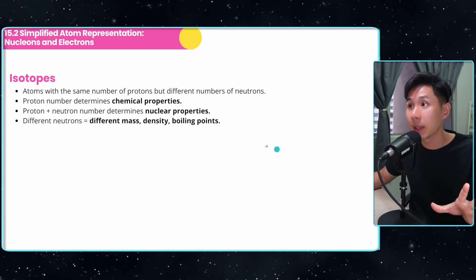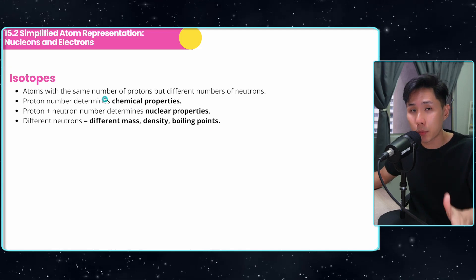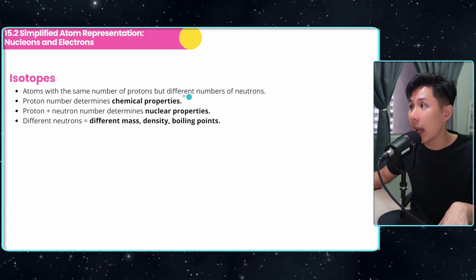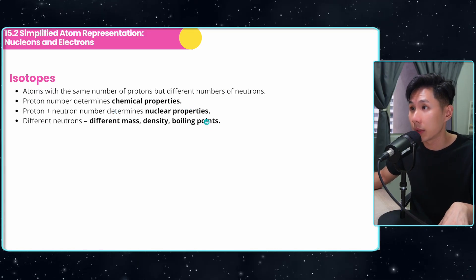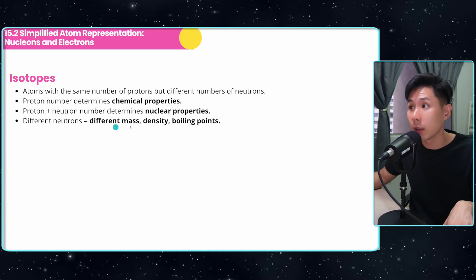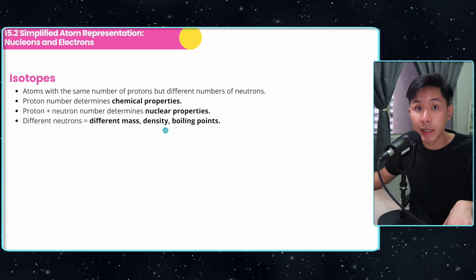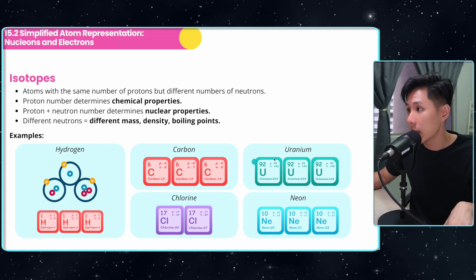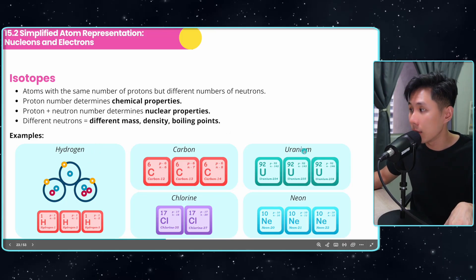Another concept: isotopes. These are atoms with the same number of protons but different numbers of neutrons. They have the same chemical properties but different nuclear properties. Different number of neutrons also means they have different mass, density, and boiling point. These are some examples of isotopes: hydrogen, carbon, chlorine, uranium, and neon.